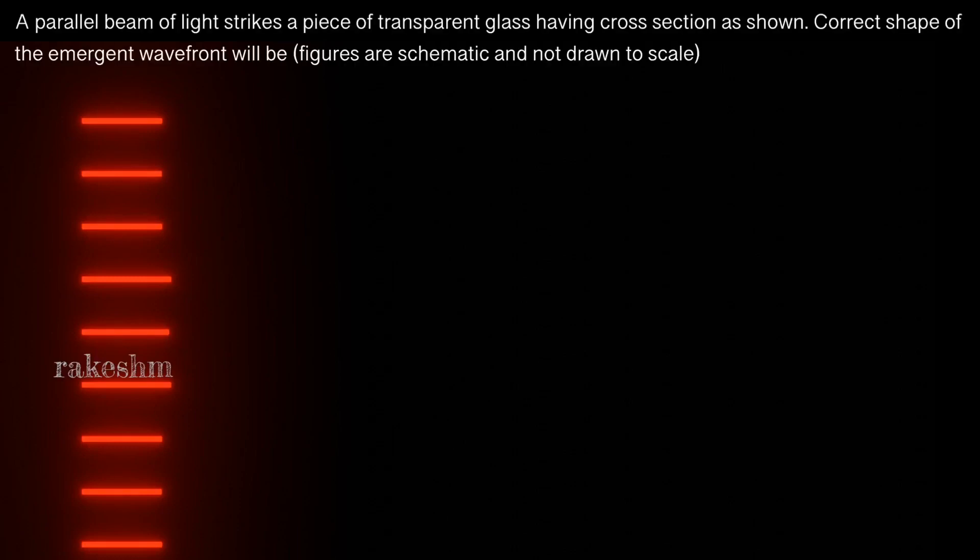Good morning dear students, let us take a look at a question from JEE Advanced 2020. This question is from the wave optics chapter. Let us first analyze the question: a parallel beam of light strikes a piece of transparent glass having a cross-section as shown.